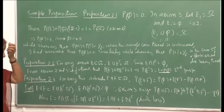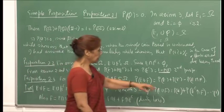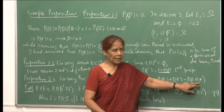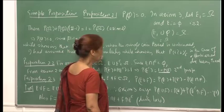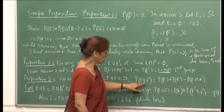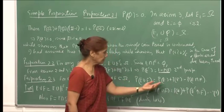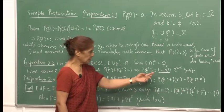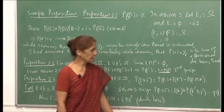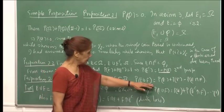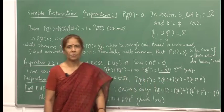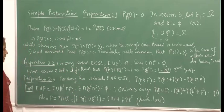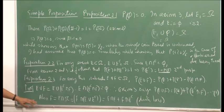In case E ∩ F is empty, the intersection term is 0 because we derived that P(∅) = 0. So P(E ∪ F) = P(E) + P(F), which is valid from axiom 3, because if E ∩ F is empty then E and F are disjoint, and the probability of the union is the sum of the probabilities. Now let us start proving this result.